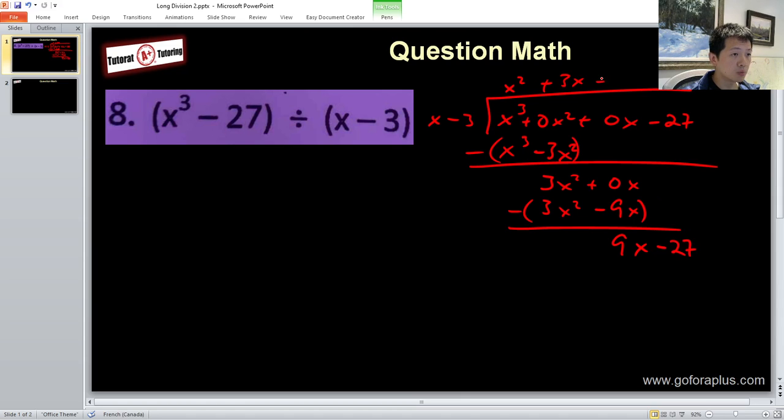And this will be plus 9. I'll have 9x minus 27, and the remainder will be 0. So the answer is x squared plus 3x plus 9. I can actually verify with the synthetic division.